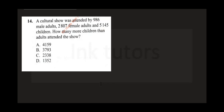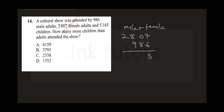Question 14 says: a cultural show was attended by 986 male students, 2807 female students, and 5145 children. How many more children than adults attended the show? All you need to do is sum up the total of male plus female: 2807 plus 986.